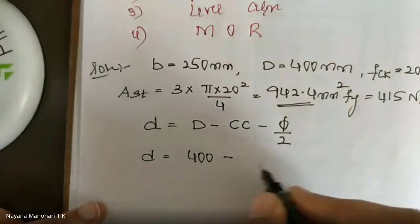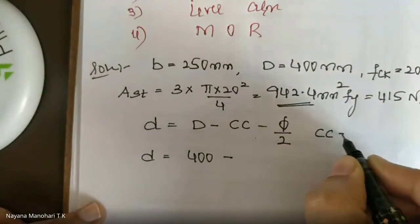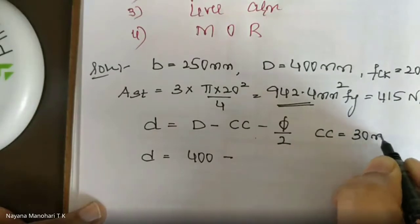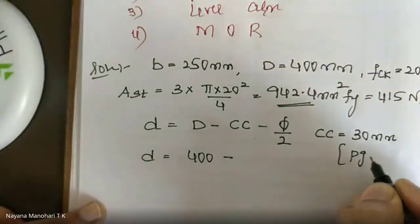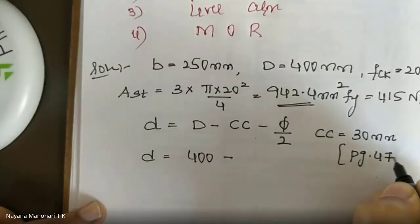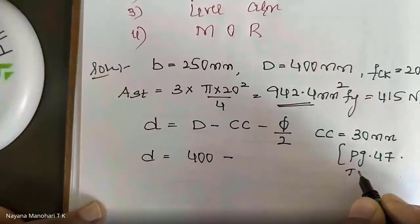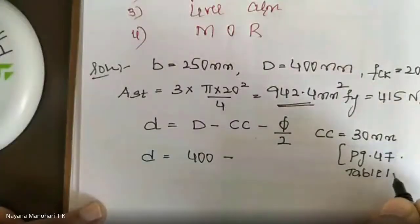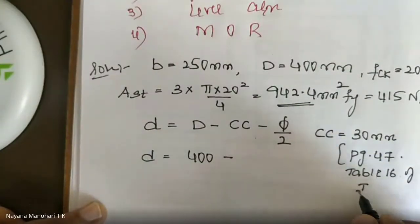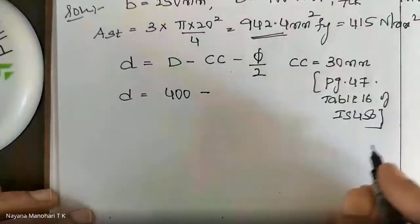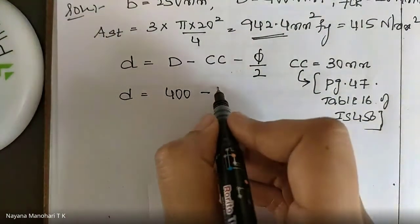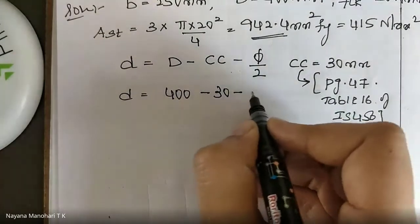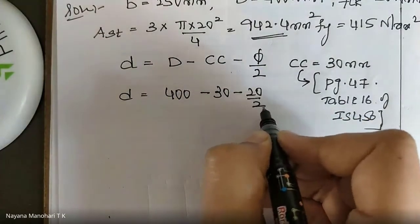In previous problems where no exposure condition was given, 30 mm was assumed by default. But when the exposure condition is specified, you must select the nominal cover from Table 16, page 47. Therefore, clear cover = 30 mm, from Table 16 of IS 456:2000. Effective depth d = 400 − 30 − 20/2.